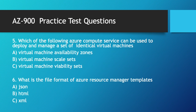Next question: which of the following Azure compute services can be used to deploy and manage a set of identical virtual machines? The correct answer is virtual machine scale sets. A scale set is a group of similar virtual machines under a load balancer. Whenever there is an increase in load, more virtual machines will be added, and when load decreases, virtual machines will be reduced. High availability is also provided. The correct answer is B.